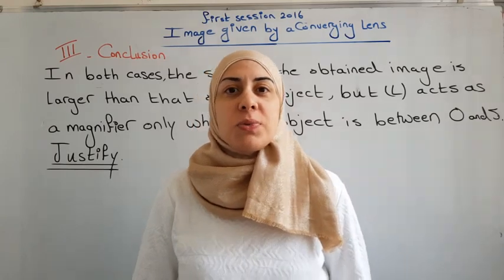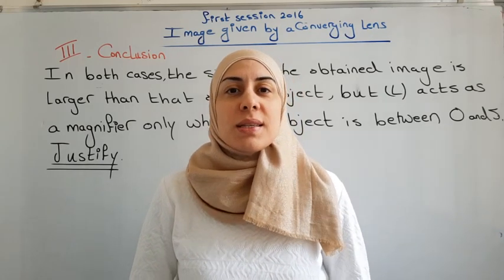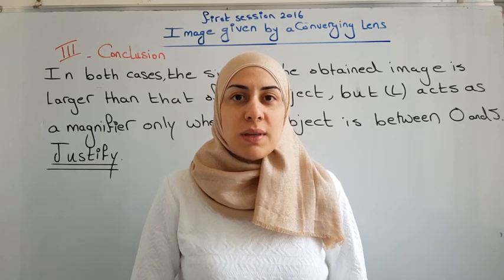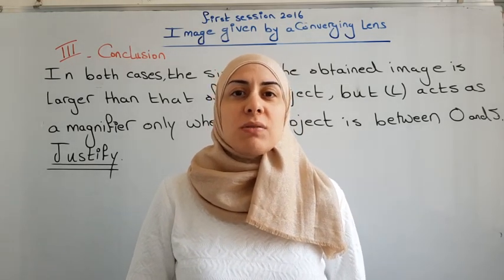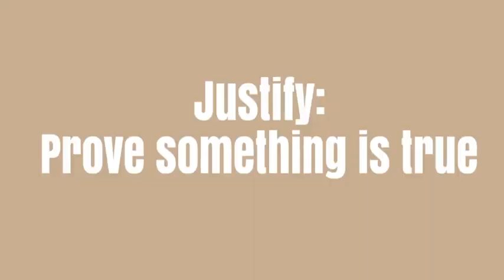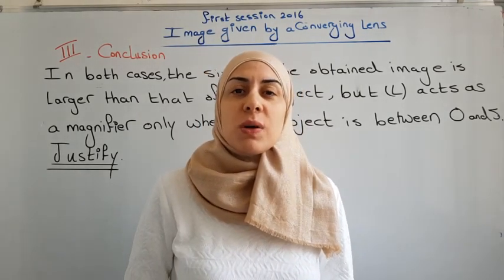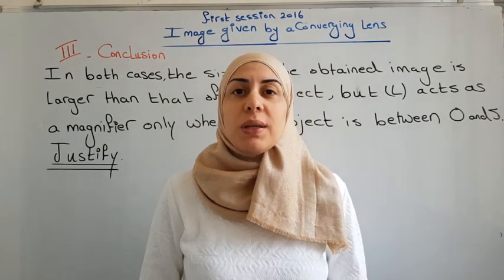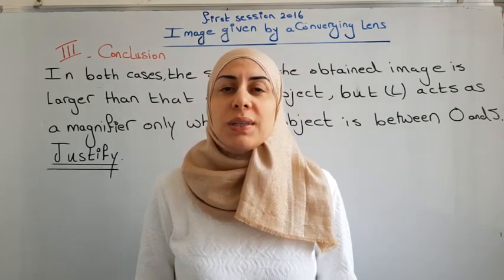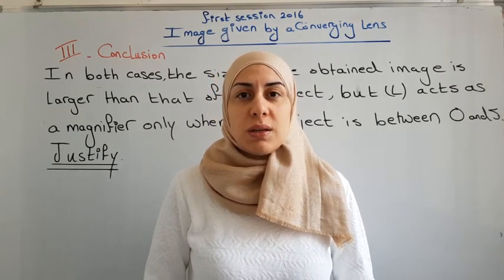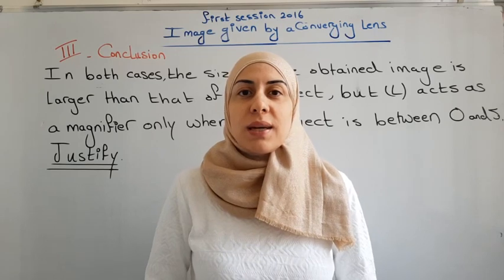In both cases — when the object was at six centimeters and when it was at two centimeters from the lens — the image was greater than the object. But only when the object is placed between O and F does the lens act as a magnifier. The lens acts as a magnifier only when it gives a magnified and erect image. In the first case, with the object between O and F, it gave a magnified and erect image. In the second case, at six centimeters, it gave a magnified but inverted image. So only when the object is placed between O and F does the lens give a magnified erect image and act as a magnifier.